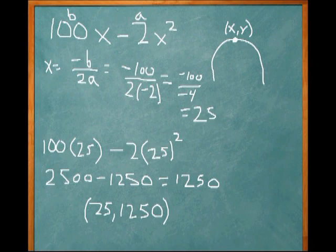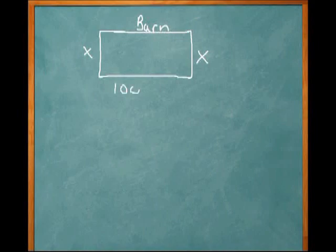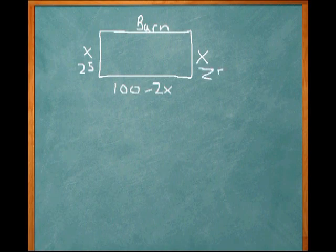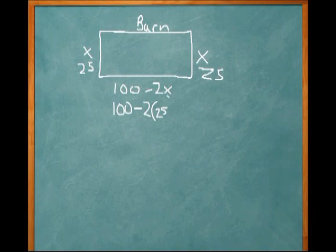So if we go back to our fenced-off area where the top is the barn wall, the two sides were X, and the bottom side was 100 minus 2X. We just figured out that X was 25, so each of these sides are 25.